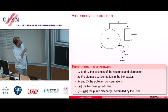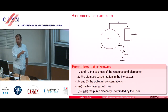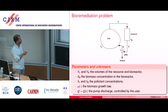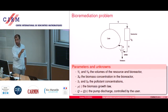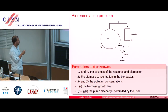A few notations. VL is the volume of the lake. VR is the volume of the bioreactor. XR is the biomass concentration in the bioreactor, which grows with the pollution. SL and SR are the pollutant concentration in the lake and in the bioreactor. And as you can see, there is no XL biomass in the lake because I want XL equal to zero. So there is no XL.